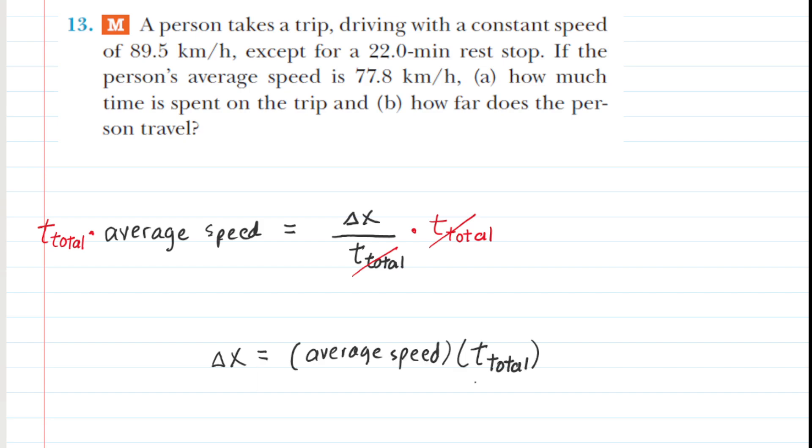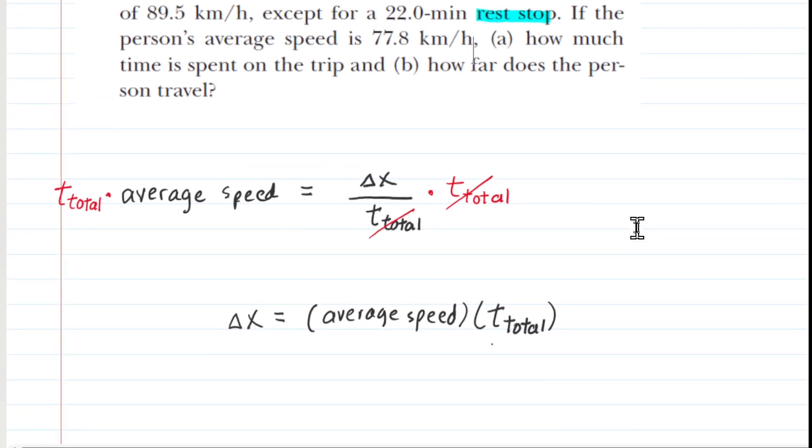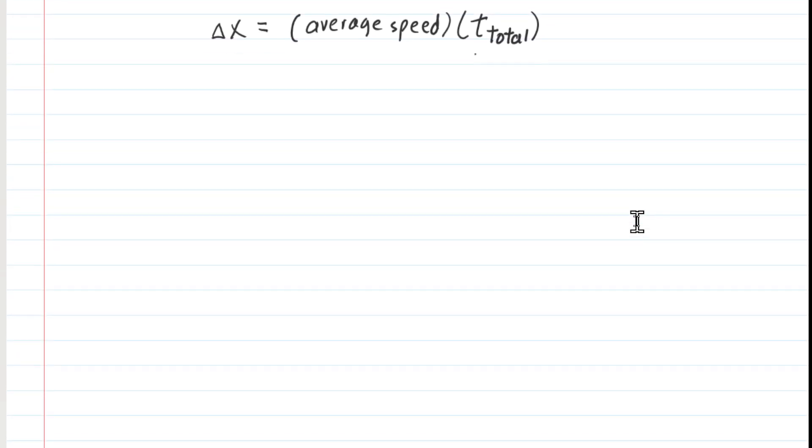Now what's interesting about this problem is that there are sort of two phases of the motion. There is the phase during which the driver is driving with a constant speed, but then there's a separate phase when she stops for 22 minutes to take a rest. So we need to divide the story into those two different segments.